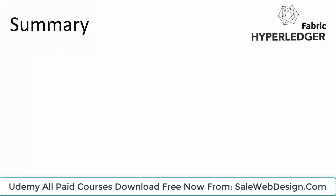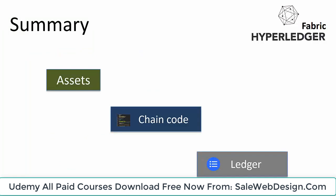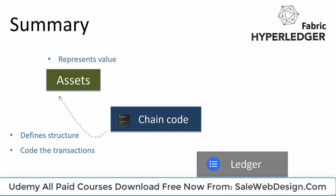In summary, assets represent anything of value in the physical world. Chaincode is used for defining the structure of the asset, which can be binary or JSON representation. Chaincode is also used for coding the transactions that can be executed against the assets. When chaincode is executed, it leads to the addition of transaction information in the ledger. The ledger also keeps track of the state of the asset.